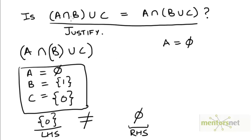Of course, these two sets could be equal in some circumstances — for example, if A, B, and C are all equal sets, then the left-hand side will equal the right-hand side. But when such a claim is made in general for arbitrary sets A, B, and C, this equality must hold for every possible value of A, B, and C for it to be true in general. Even if there is one counterexample for which this equality fails, we say that this claim is not true in general — and we have found such a counterexample.